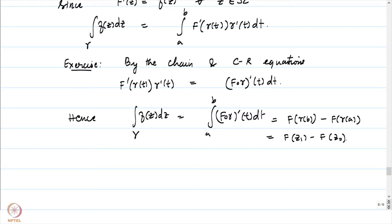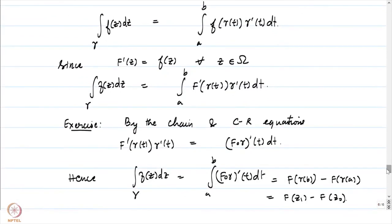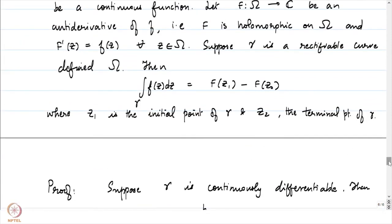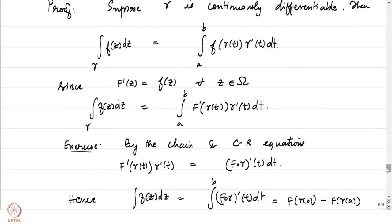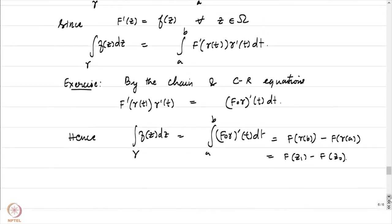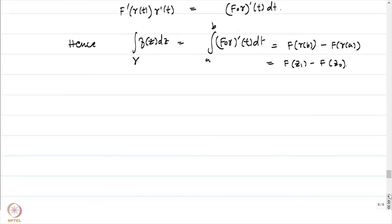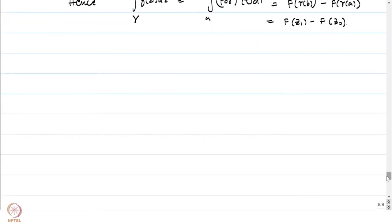So if the curve gamma is continuously differentiable, our work becomes extremely easy and we can conclude the complex analog of the fundamental theorem of calculus from the real analysis result. However, we have put more generality here — we are only assuming that our curve is rectifiable — and therefore we will not have this expression in general. We will have to work a bit more to prove the result for rectifiable curves.